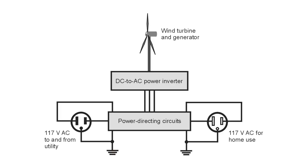Let's take a look at an example of a grid intertie wind power system. This particular system does not include batteries. Some do. The batteries help to provide you with power in the event you have a windless day and a power failure at the same time. Also, the batteries help to buffer the power from the wind turbine so that you can get a constant stream of power from those batteries, and it doesn't depend on how much power the wind turbine is generating.